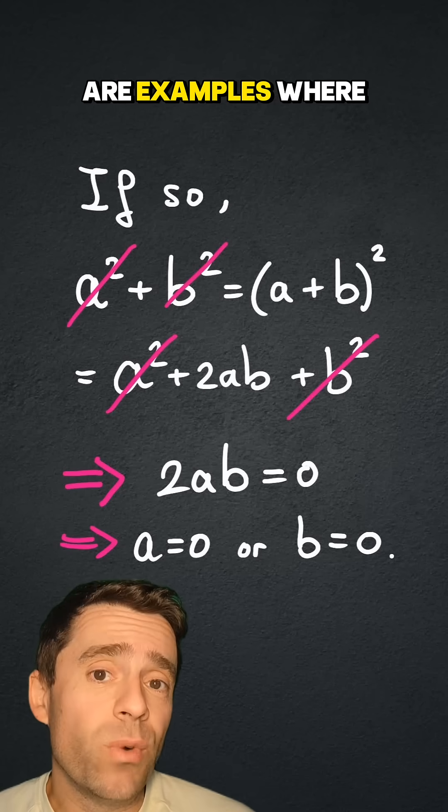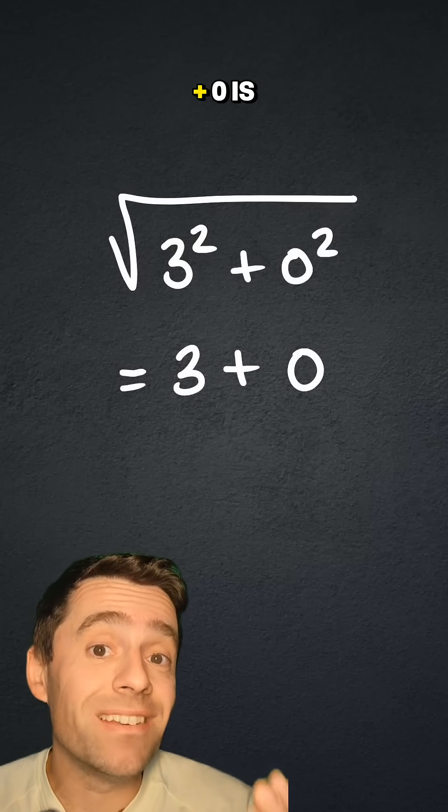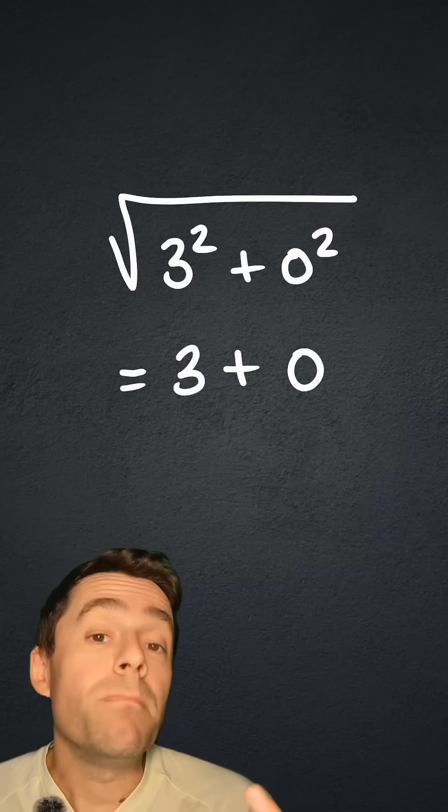So yes, there are examples where it works, but they're just boring, like the square root of 9 plus 0 is equal to 3 plus 0. Boring.